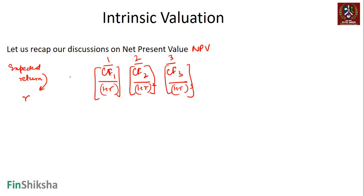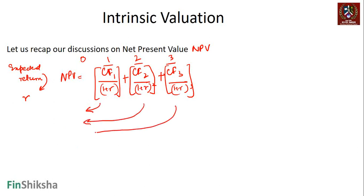The net present value of this series is the summation of all these discounted values — I have taken all these cash flows and moved them to time zero. Now let's simplify the argument.